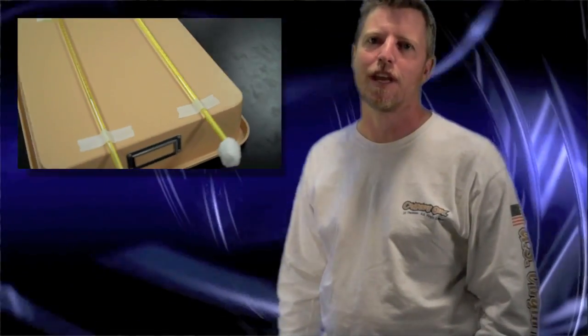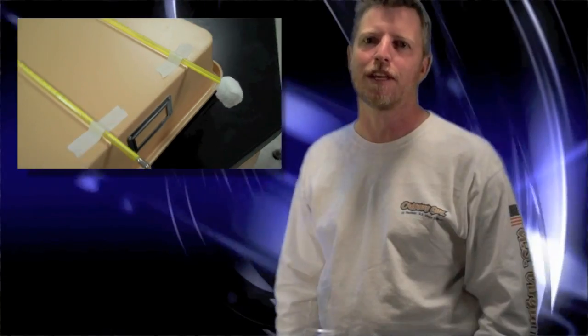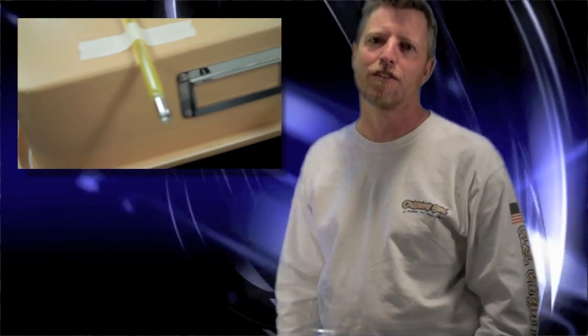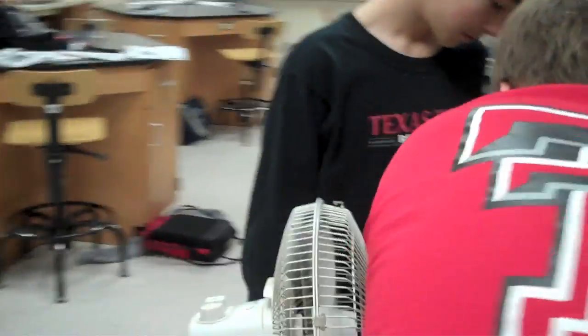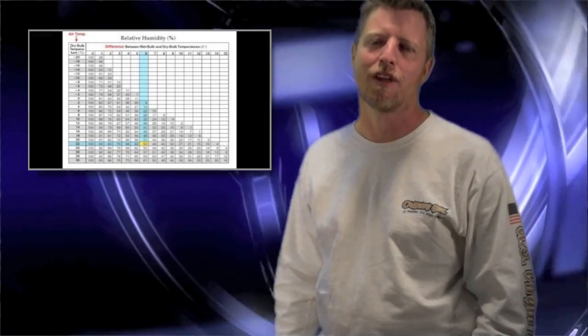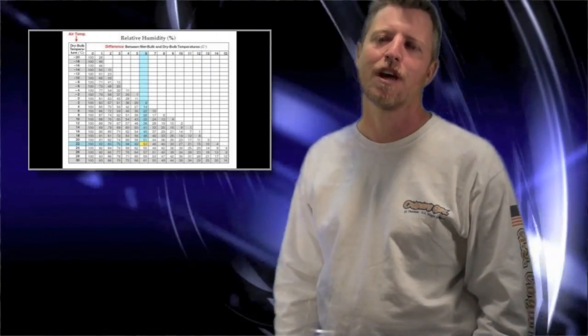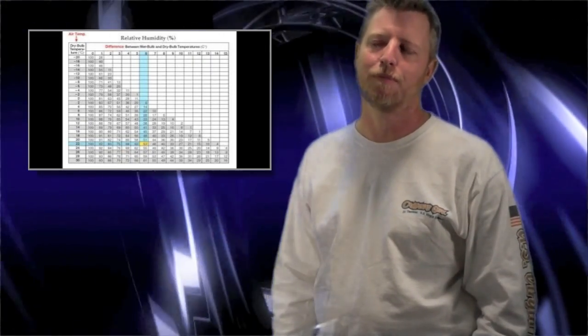In class today we actually made some psychrometers. We used two thermometers and set them on the outside of some tubs so they wouldn't contact the table. We wet one end with a cotton swab placed in water and left the other side dry. We put this in front of a fan in the classroom and used a chart based on the difference in the two temperature readings to determine what the relative humidity would be in the room.